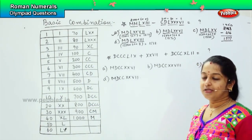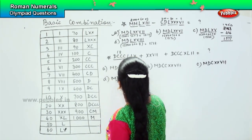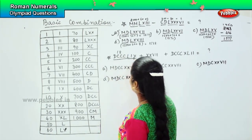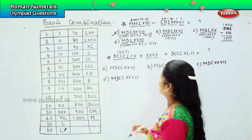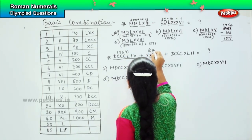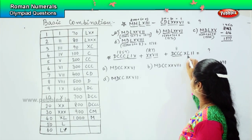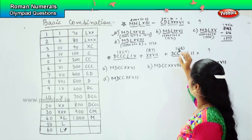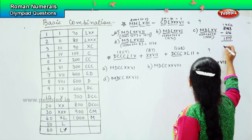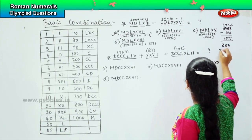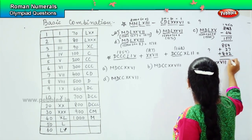So now we will first find the numerical value. D triple C is 800, LIX — L is 50 and 9, so 859. Double X is 20 and V double I is 7, so 27. D triple C is 800, XL is 42, so 842. So we shall add them: 859 plus 27 plus 842.